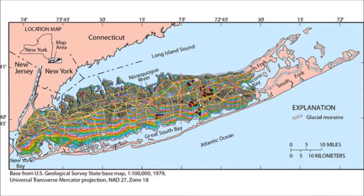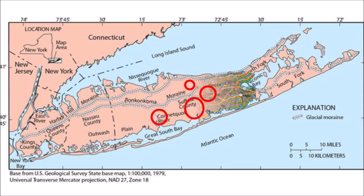We will use a map from the U.S. Geological Survey that marks the location of the terminal moraines for our analysis. First we need to identify the location of the Carolina Bays by adding a layer with the LiDAR image over the map. On a third layer, we draw red circles to mark the areas with Carolina Bays, and then we remove the LiDAR image. We now have a USGS map with the location of the Carolina Bays.